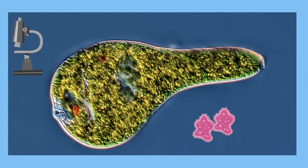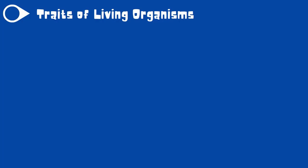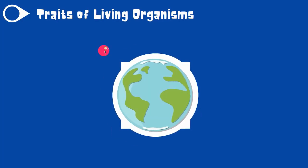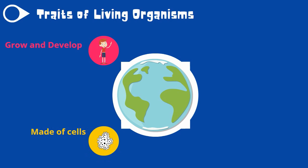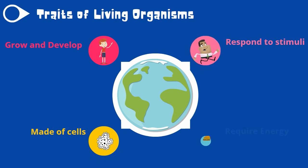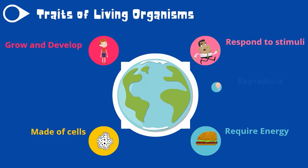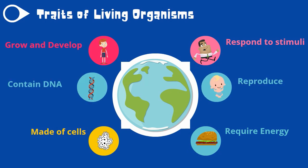In order to be considered biotic, it must have these six traits: the organism must be able to grow and develop, be made of cells, respond to stimuli, require energy, be able to reproduce, and finally contain DNA.